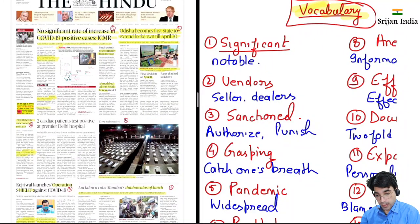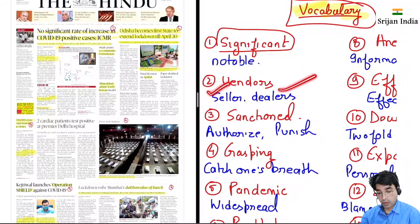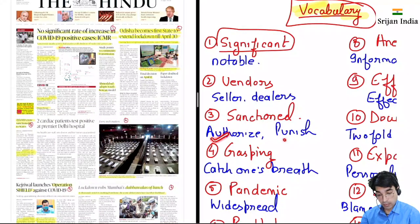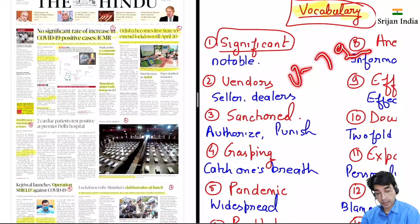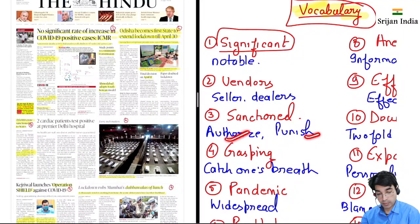Pahla hai 'significant' — ka matlab hota hai notable, noteworthy, important. 'Vendors' ka meaning hota hai sellers or dealers. Then 'sanctioned' — sanction ka meaning hota hai authorize karna ya punish karna bhi. USA ne sanctions laga di hai Iran pe. Sanctioned this much amount of money for this expenditure — toh sanctioned ka matlab authorize and punish, dono.